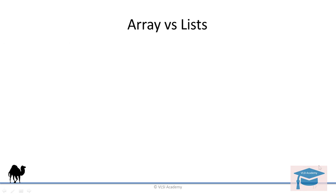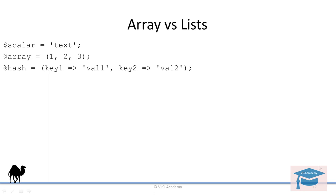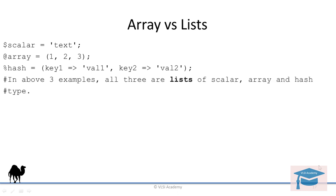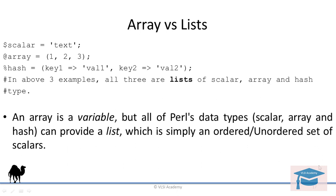When we define a scalar variable such as this, it is nothing but a list with one scalar variable. When we define an array like this, it is nothing but a list with a collection of different items. And when we define a hash like this, it is nothing but a list with different key-value pairs. Hence, in the above examples, all three lists are of scalar, array, and hash type. An array is a variable, but all of Perl's data types — scalar, array, and hash — can provide a list, which is simply an ordered or unordered set of scalars.